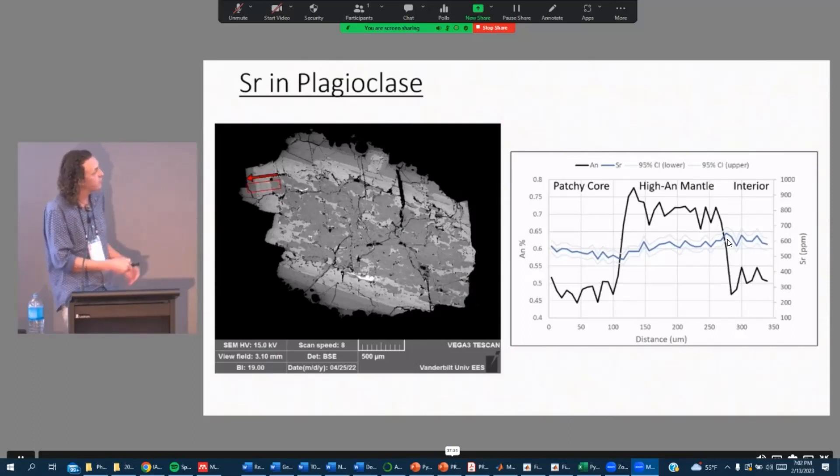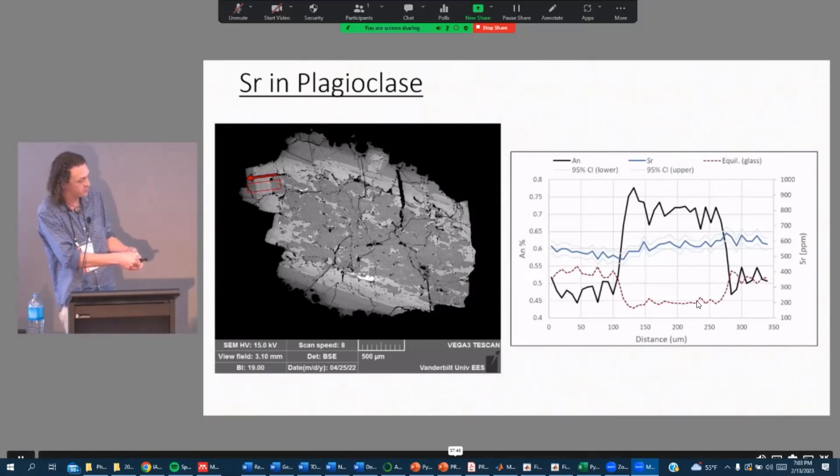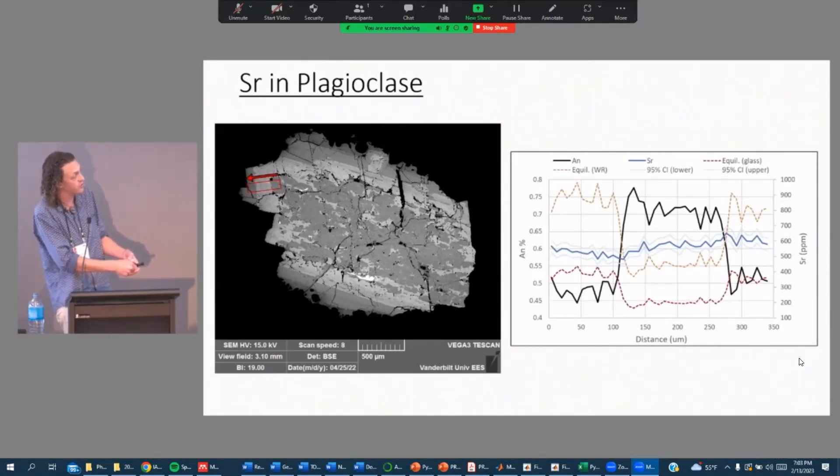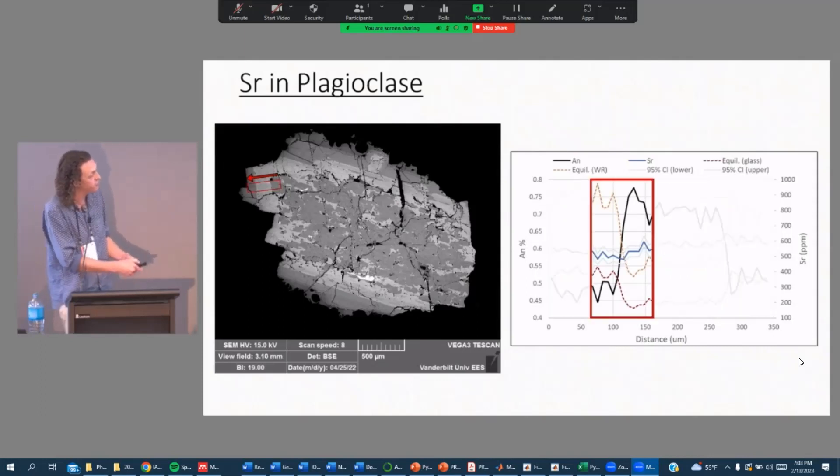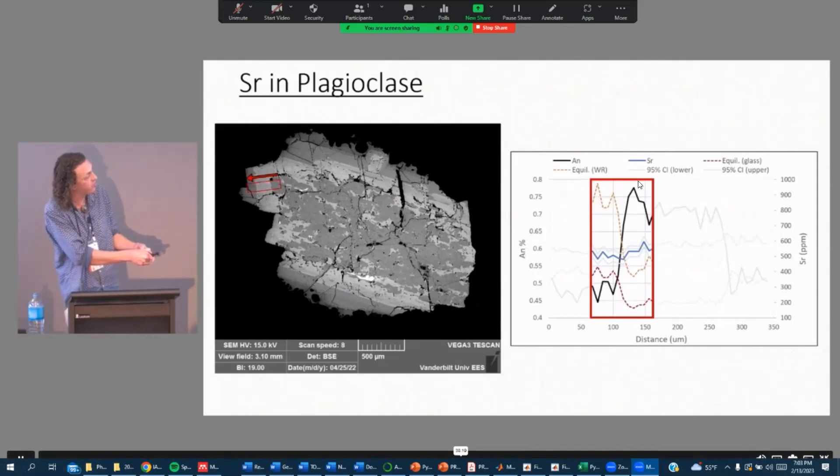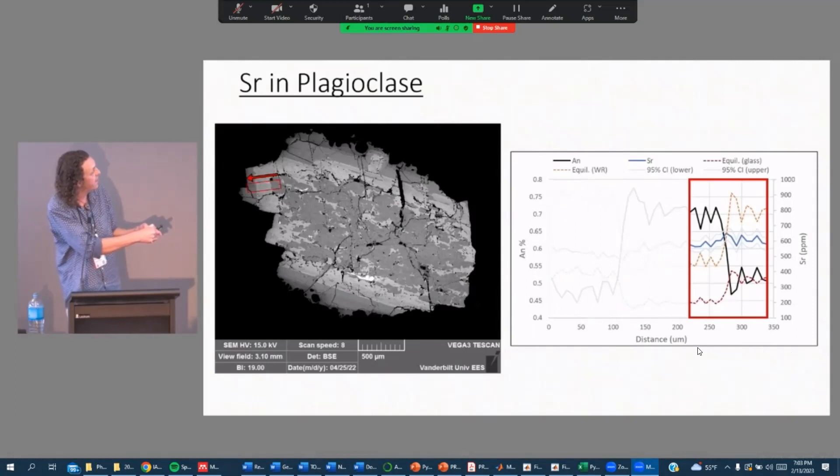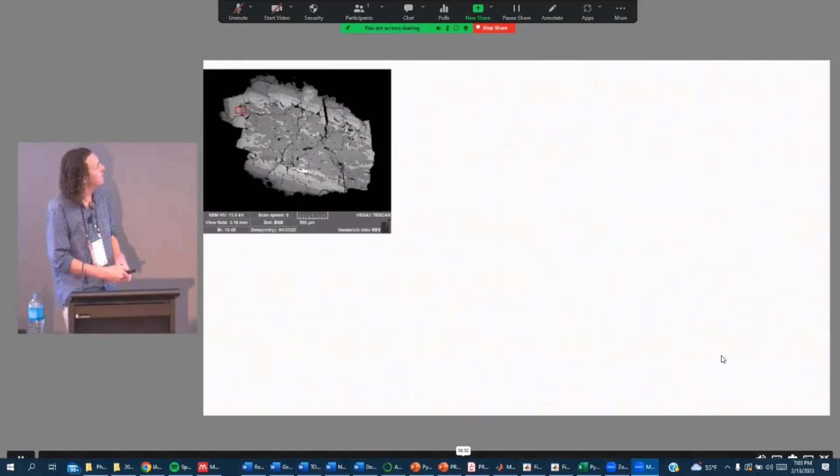Associated with that increase in anorthite, there's a slight increase in strontium. Then further down we have a decrease in anorthite, and again an increase in strontium. So if we overlay the equilibrium that we would expect, either from partitioning or from full diffusive reequilibration, then we should expect a negative correlation here between anorthite and strontium. That's for the glass which has 80 parts per million strontium. And then if it was in equilibrium with the whole rock at 180 parts per million strontium, that's what it would look like. But either way we should be expecting, after full diffusive reequilibration, we should expect a strong negative correlation, which of course we don't see here.